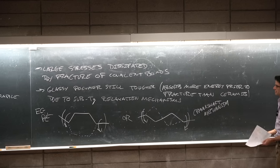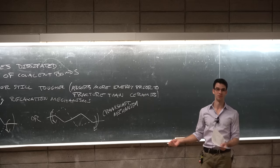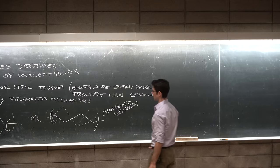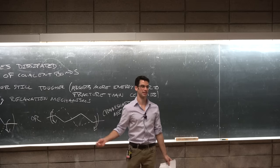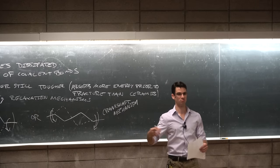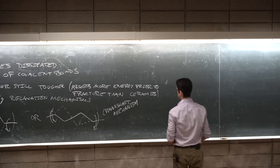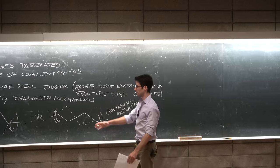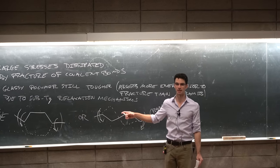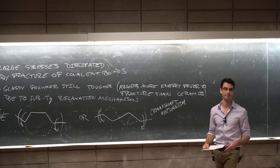So, these bond rotations take energy, but they don't deform the sample as a whole. And these mechanisms are not really available in, say, an inorganic glass where every atom is bonded to all the other atoms in the vicinity. So, it's really a matter of the one-dimensionality of a polymer chain that allows this type of energy dissipation mechanism.